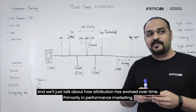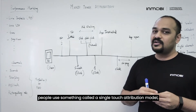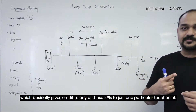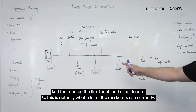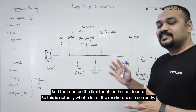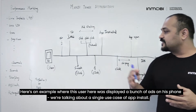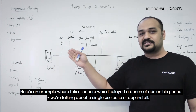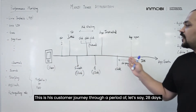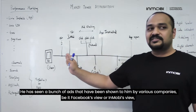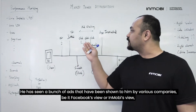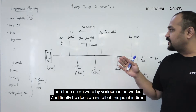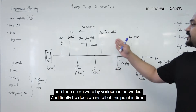Primarily in performance marketing, people use something called a single-touch attribution model, which basically gives credit for any of these KPIs to just one particular touch point — and that can be the first touch or the last touch. This is actually what a lot of marketers use currently. Here's an example where this user was displayed a bunch of ads on his phone. We are talking about a single use case of app install, and this is his customer journey through a period of 28 days.